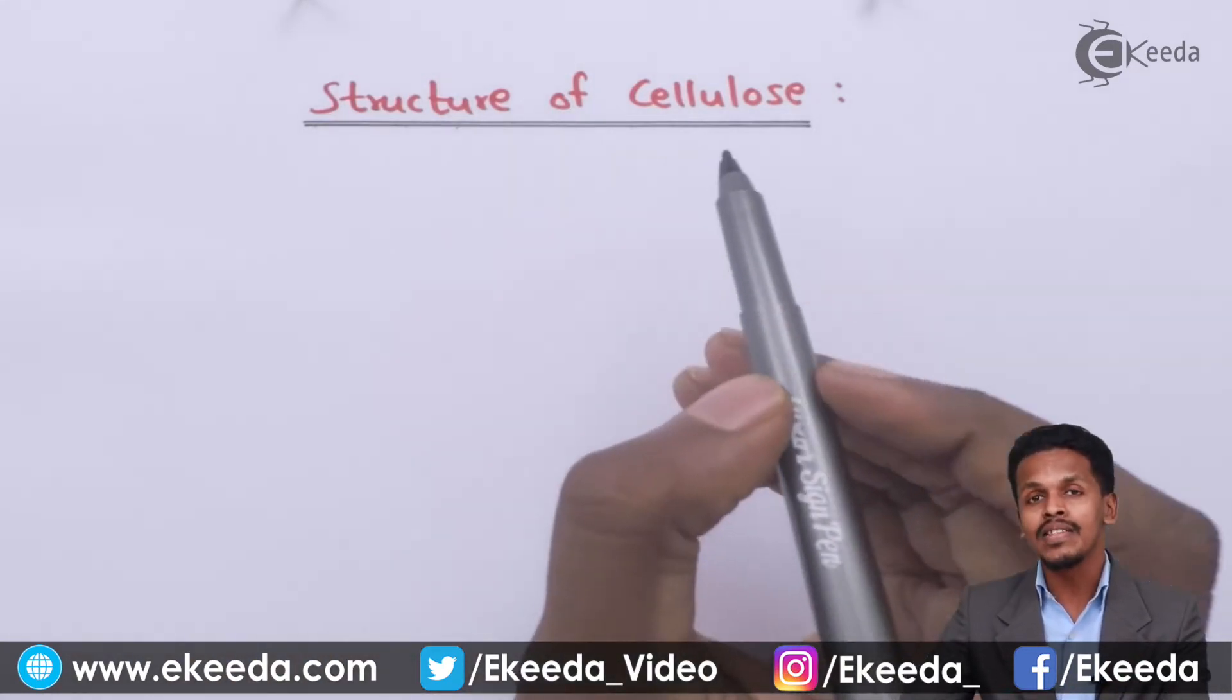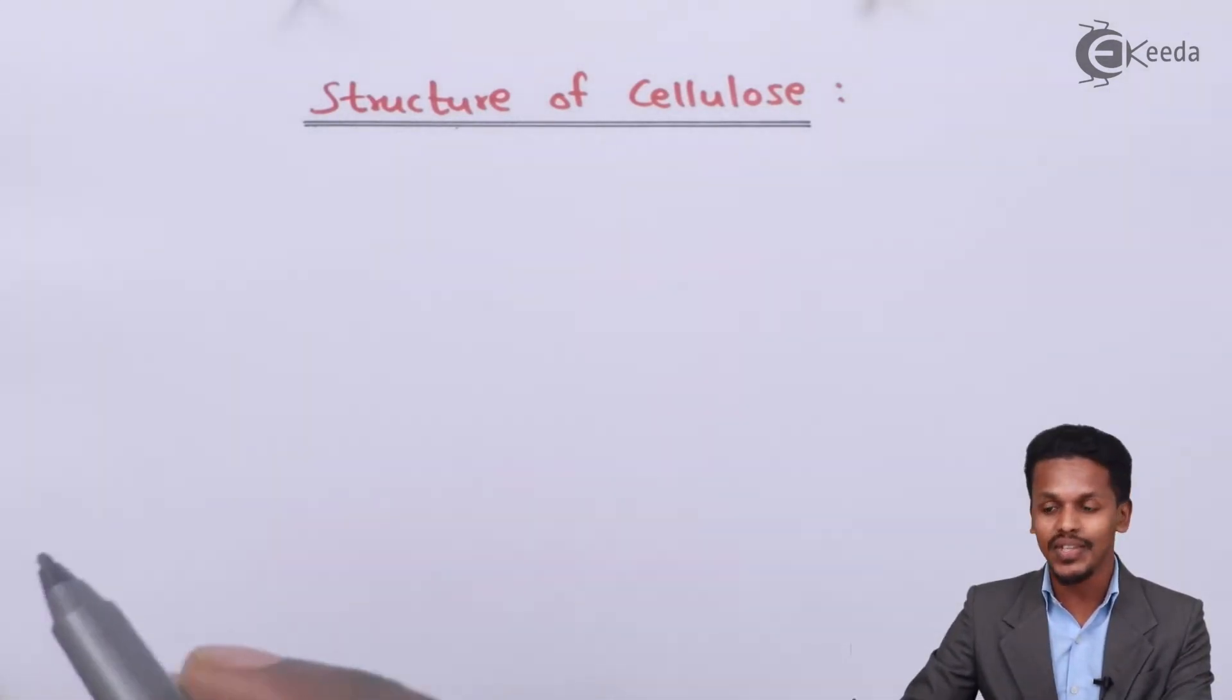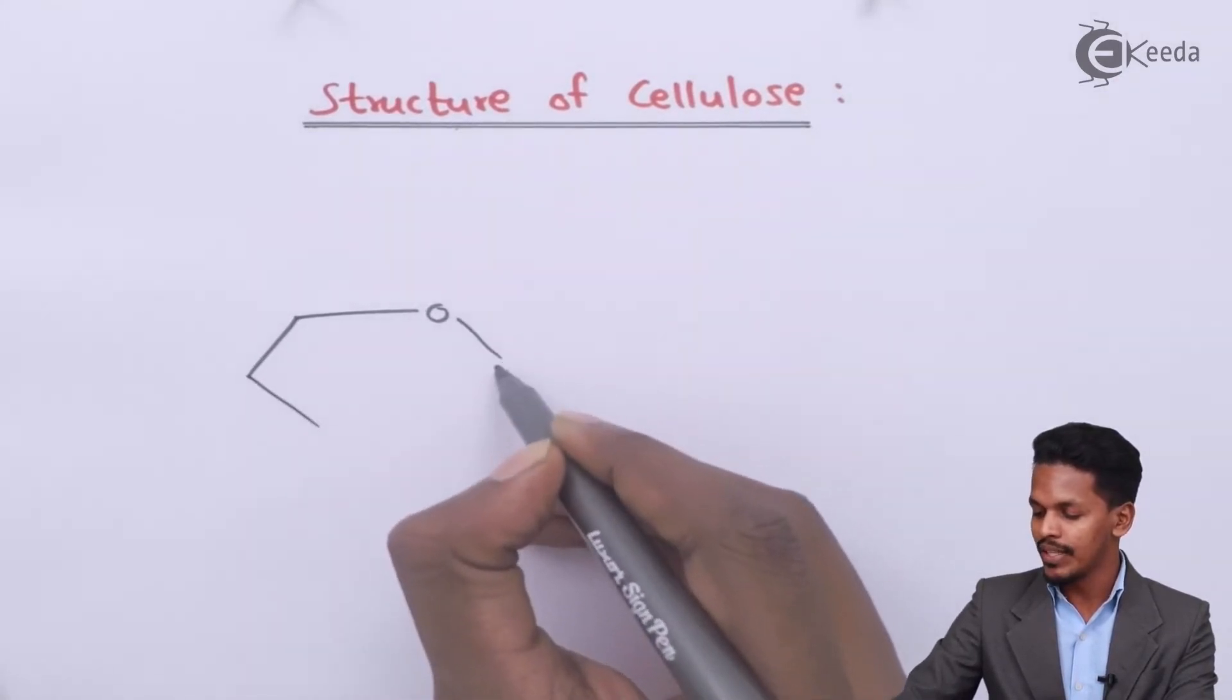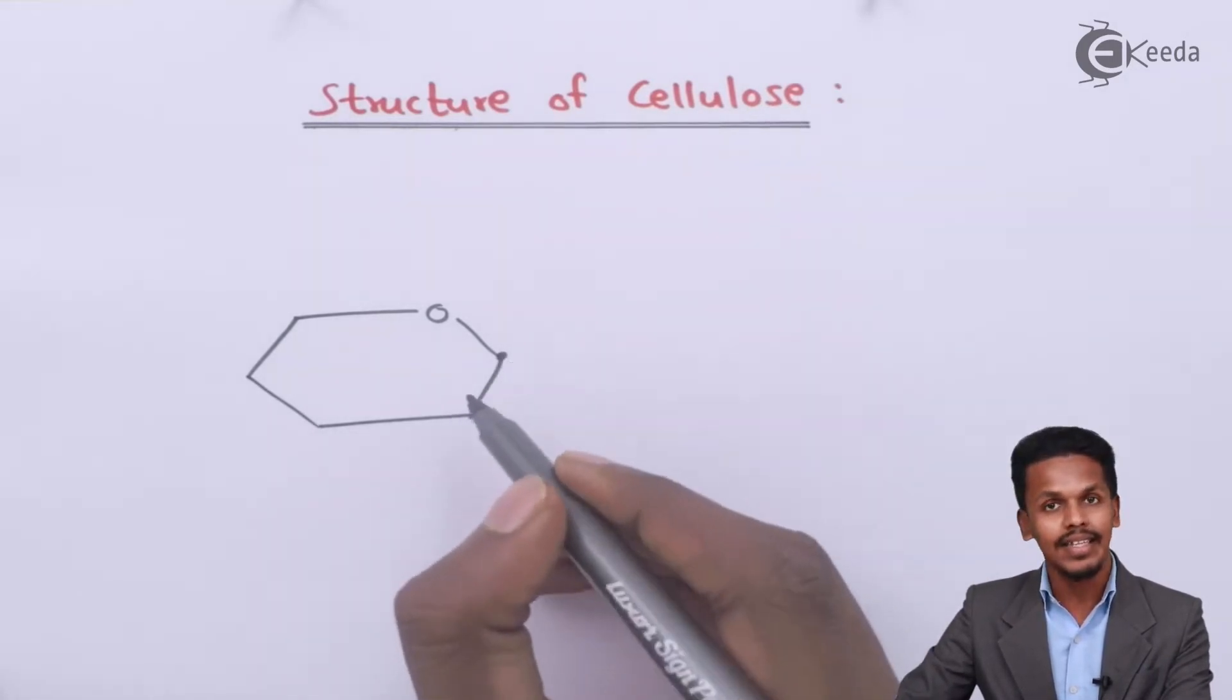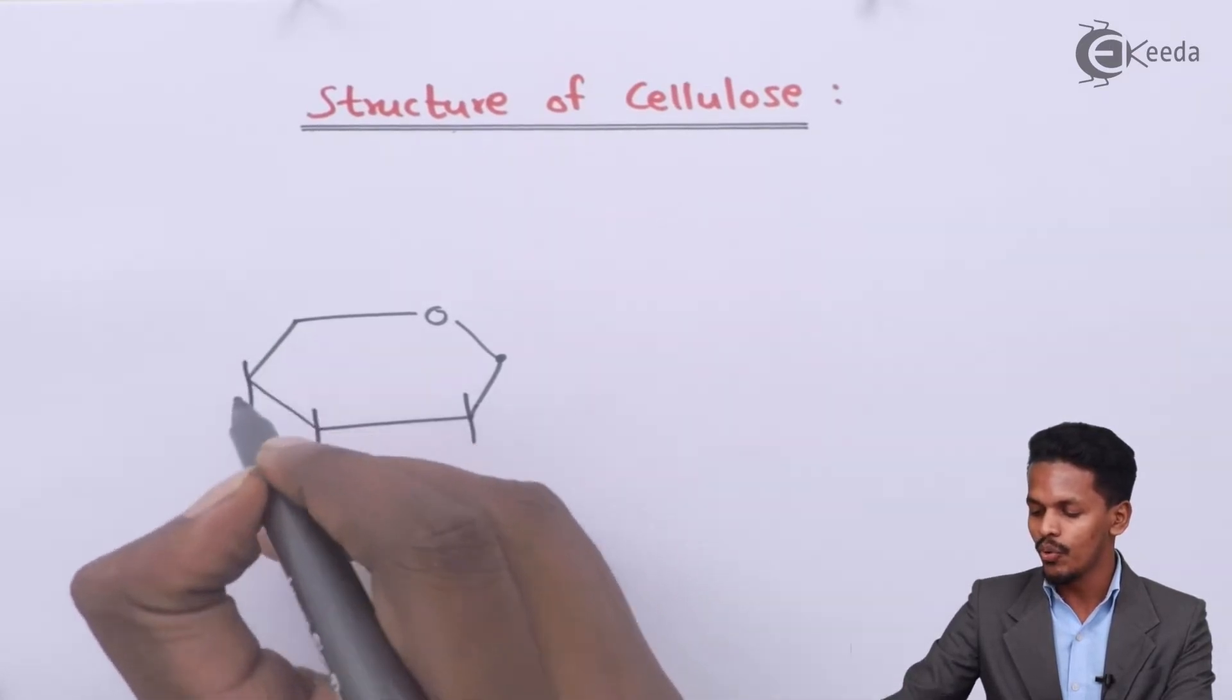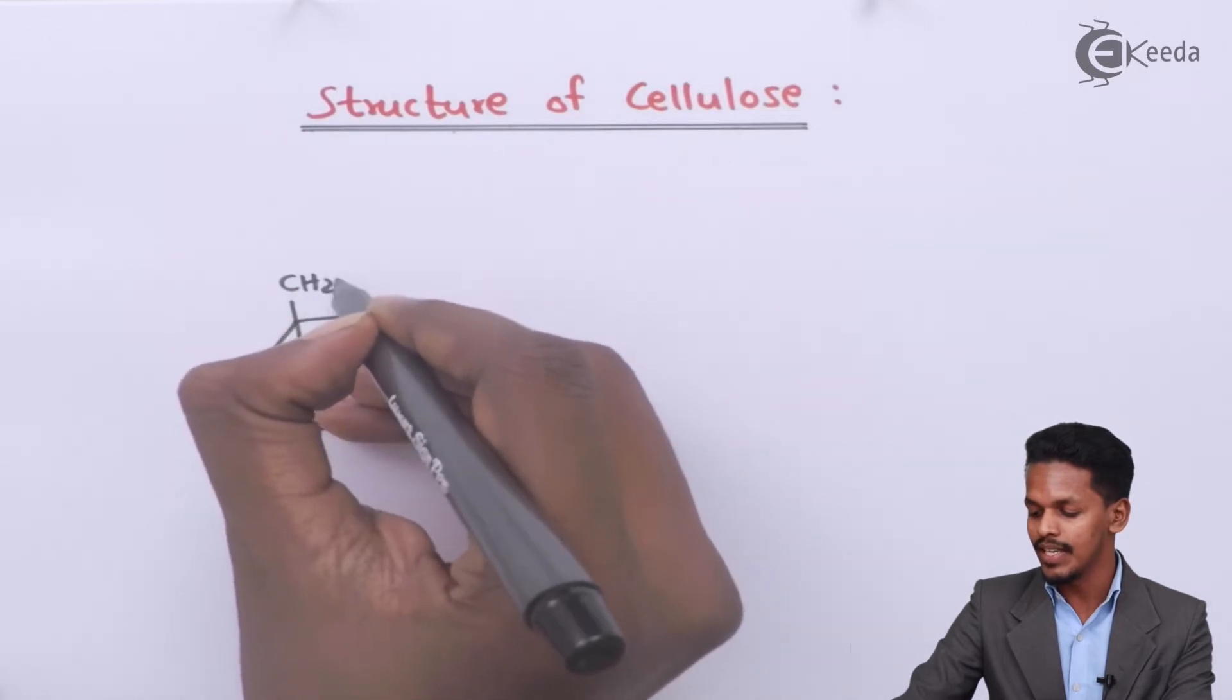As we have understood that cellulose is a polymer of beta-D-glucopyranose, we can draw the structure. So this is what I am going to draw the structure for the beta-D-glucopyranose. And this is the anomeric carbon. I am talking about the second carbon, third, fourth and this is fifth. So the sixth carbon atom is over here. That is CH2OH. This is H over here.